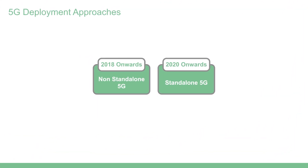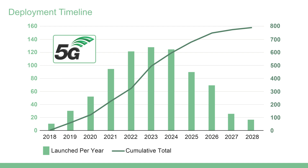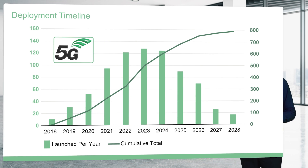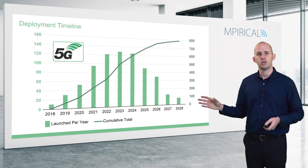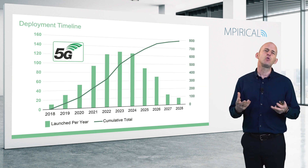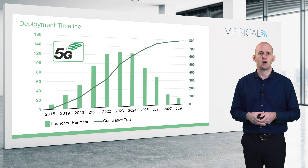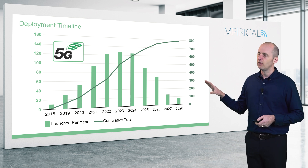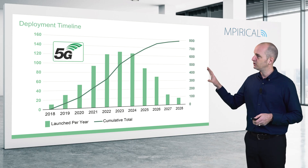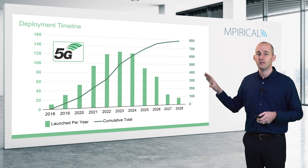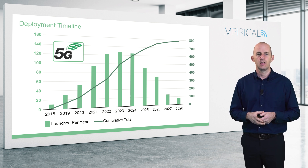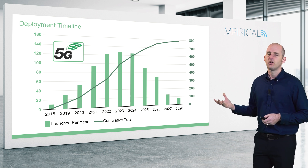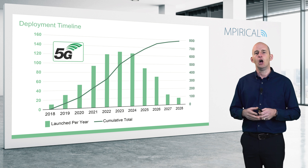It's worth considering the timeline for deployment, and this trajectory will hopefully follow 4G, as guided by 3GPP, the standards body behind 5G. There are approximately 800 mobile service providers around the globe today, but we also need to remember the prevalence of private 5G. There could be many more actual 5G deployments, and the overall growth is obviously going to be similar to LTE, if not shifted by a number of years.